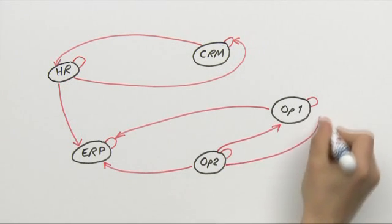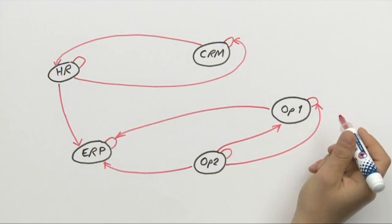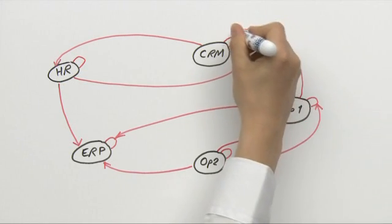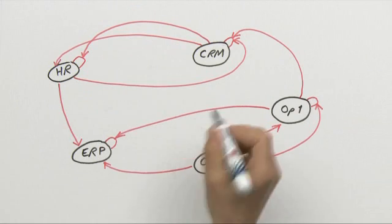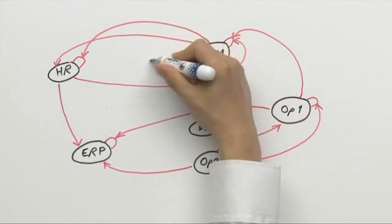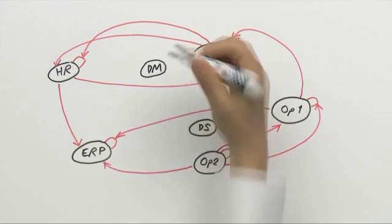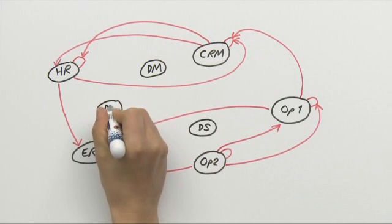Eventually what emerges is a whole series of links culminating in different data flows and very likely before long inconsistency in results being reported. So IT sticking plasters are then superimposed on the diagram, typically in the form of operational data stores, data marts and so on.